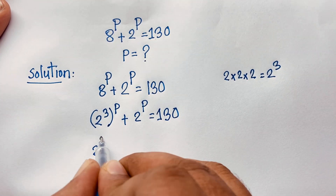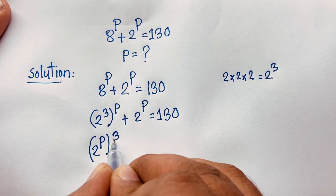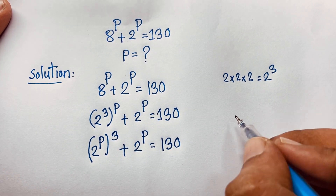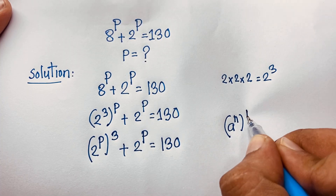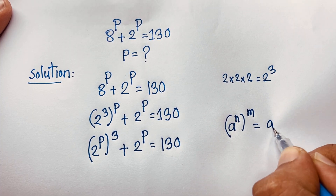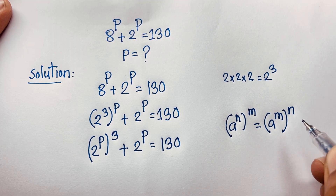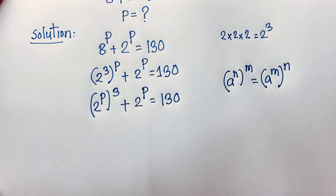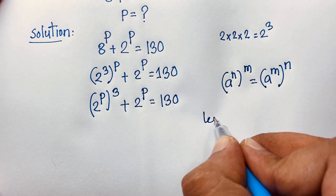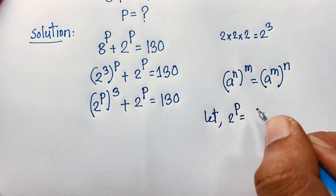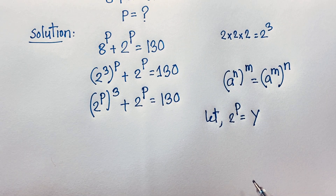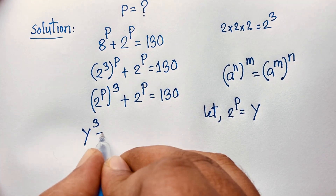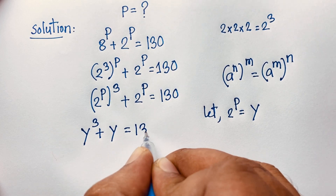According to the exponential law, 2 to the power p whole to the power 3, plus 2 to the power p, equals 130. We know that (a^n)^m = a^(n·m). So I let y = 2 to the power p. The equation becomes y cubed plus y is equal to 130 — a nice cubic equation.